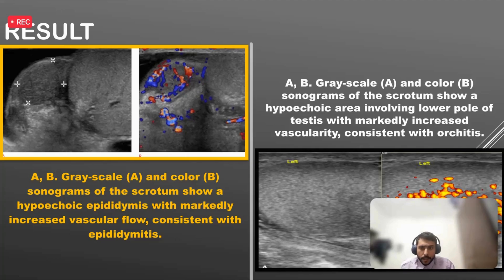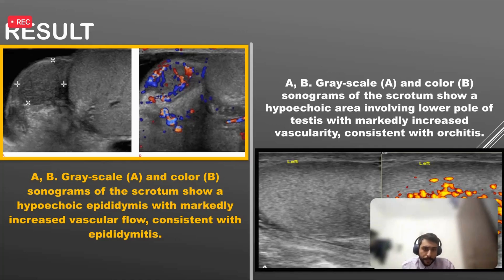In the first image, the greyscale and Color Doppler images show the epididymis appearing bulky and heterogeneous in echotexture, with increased vascularity on Color Doppler flow indicating epididymitis. A hypoechoic area indicates abscess development. In the second image, increased color flow indicates orchitis, which is usually caused by paramyxovirus causing mumps. The diffuse involvement shows the testis as bulky and edematous with increased vascularity.